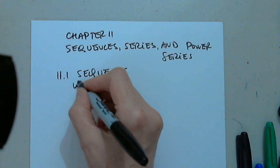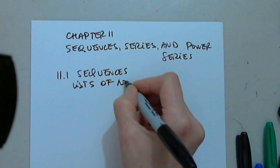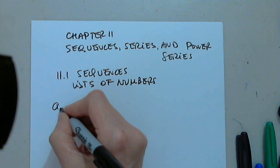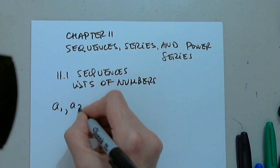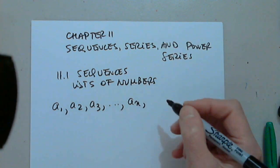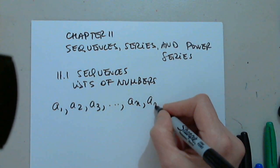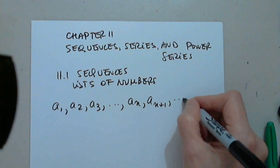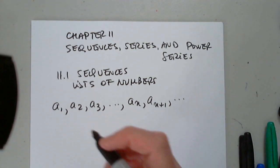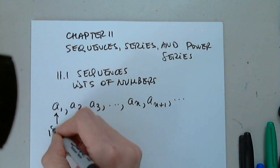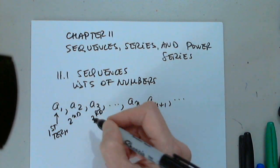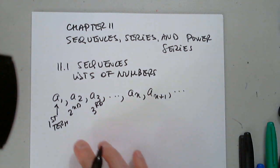Sequences are lists of numbers, and the way we denote them is just a1, a2, a3, three dots, a sub n. I can list the next one, a sub n plus one, but normally this is good enough with three more dots. As you notice, this is the first term, this is the second, this is the third, and so on and so forth — terms of the sequence.